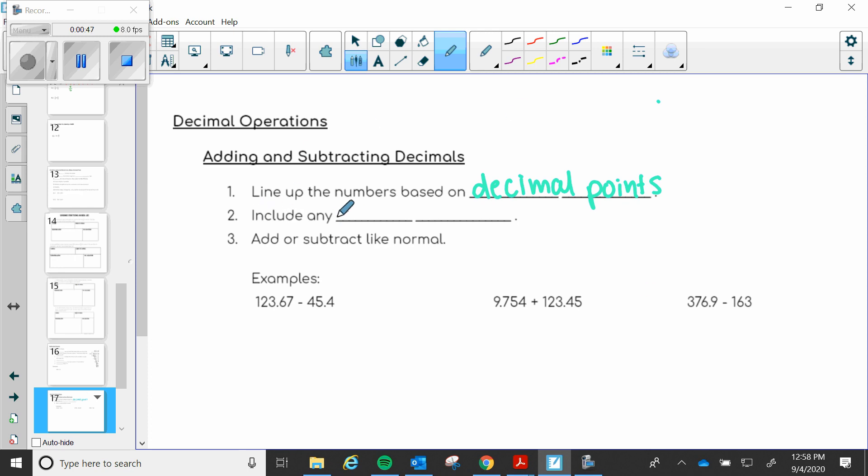Step two, make sure you include any placeholders. So if one number has more digits after the decimal than the other one, you need to make sure that you add those placeholder zeros at the end. But I'll show you that in just a second.